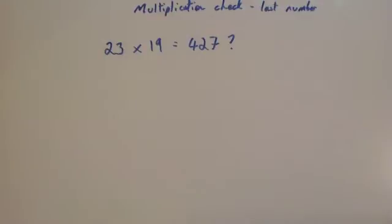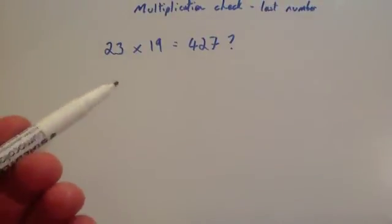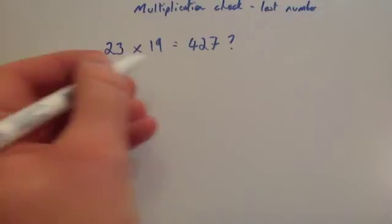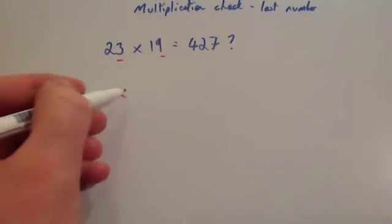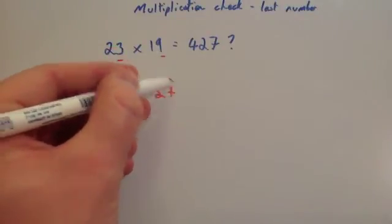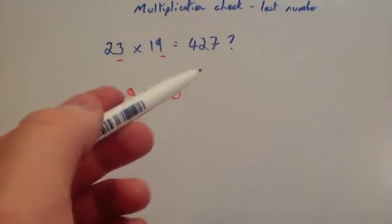Just a quick word of warning though. So here we've got 23 times 19. If we were to multiply the last two digits, the 3 and the 9, well 3 times 9 equals 27. Now notice it ends in a 7, so that means our answer must end in a 7.